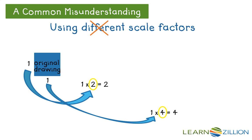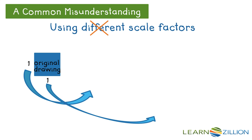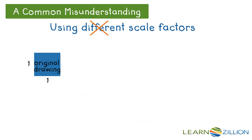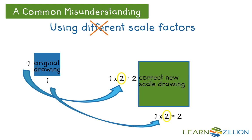We have used different scale factors on the lengths of this original drawing. As you can see by this scale drawing, it is not the same shape — it is a rectangle instead of a square. Now let's start again with the same 1 by 1 square and multiply it by the same scale factor of 2. Now you can see that our green square is a correct new scale drawing because it is an enlarged version of our original drawing.